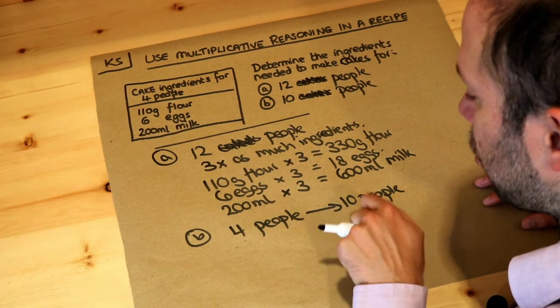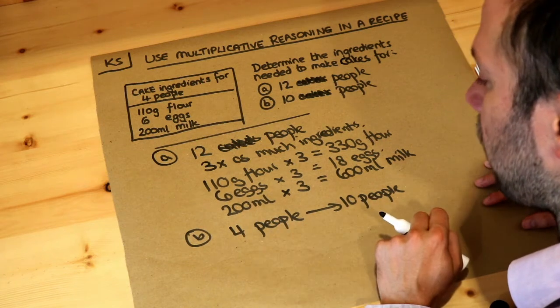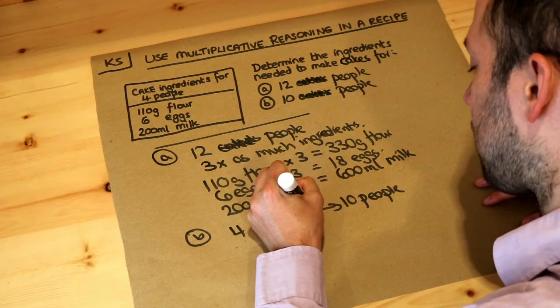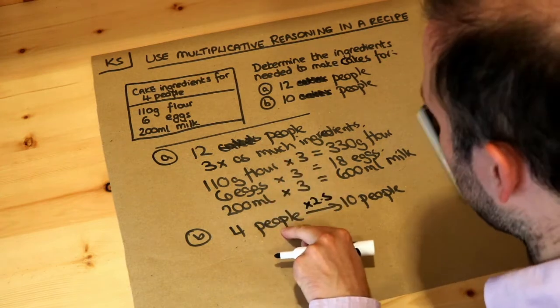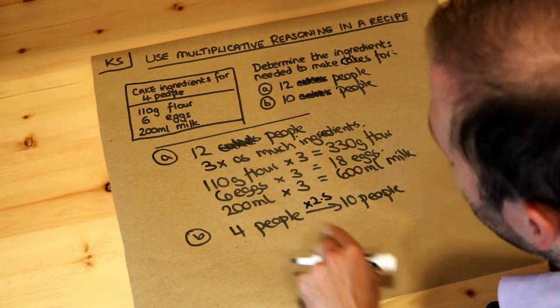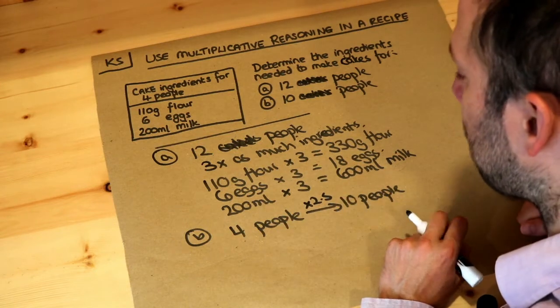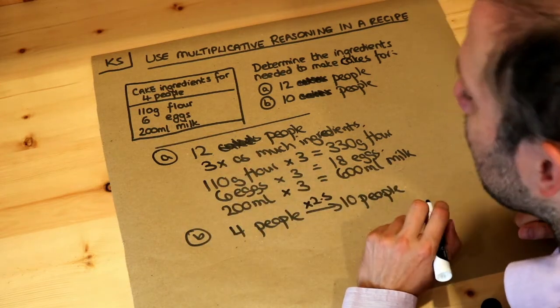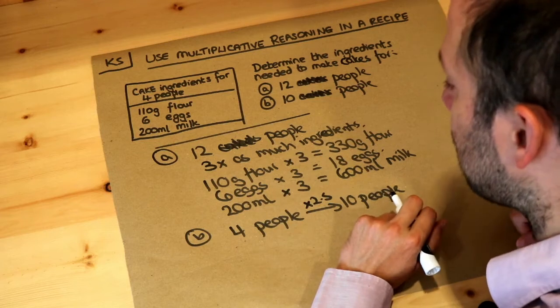That's an extra half a lot of people. So we need to times this by 2.5. If we divide 10 by four, we get 2.5. So if we have 2.5 times as many people, two and a half times as many people, then we need two and a half times as much ingredients.